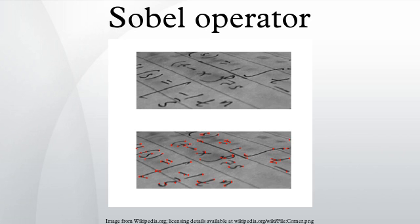The Sobel Operator, sometimes called Sobel Filter, is used in image processing and computer vision, particularly within edge detection algorithms, and creates an image which emphasizes edges and transitions.